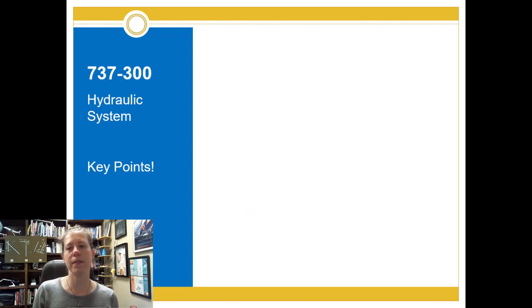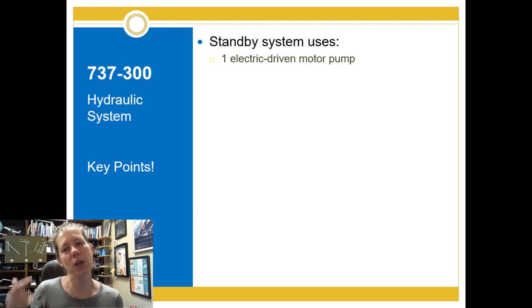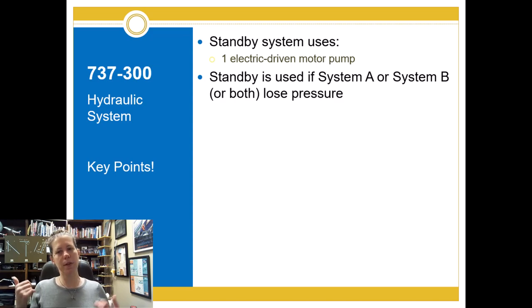We also have a standby system for added redundancy, which is powered by an electric driven motor pump. The standby system comes into use if we lose System A pressure or System B pressure or both. That would be more catastrophic, of course. But the standby system should still be available.